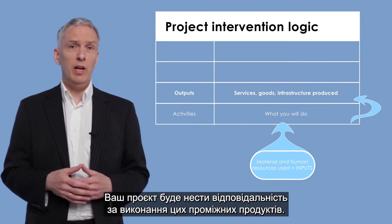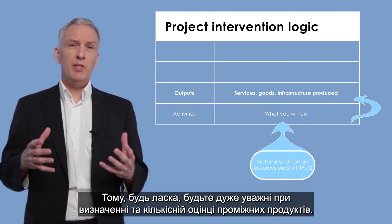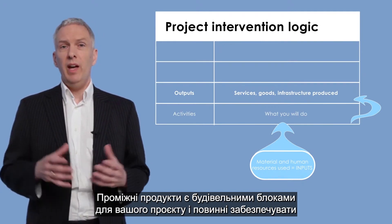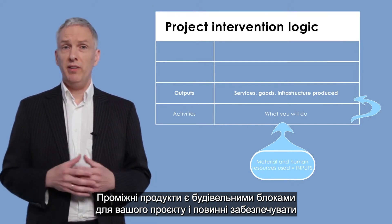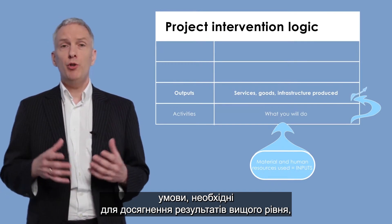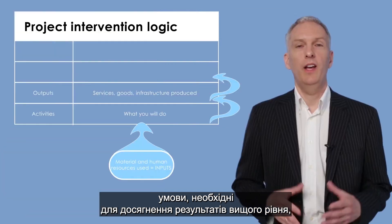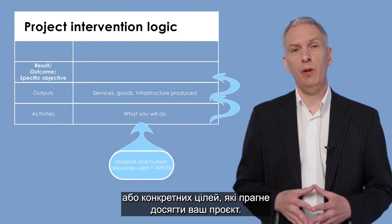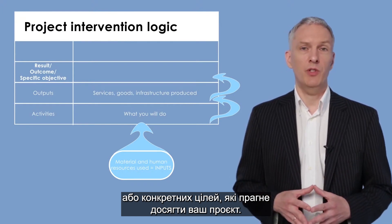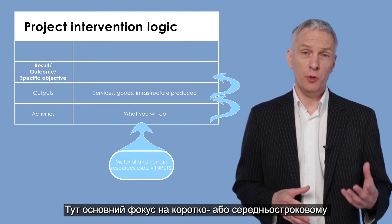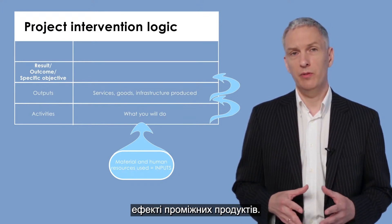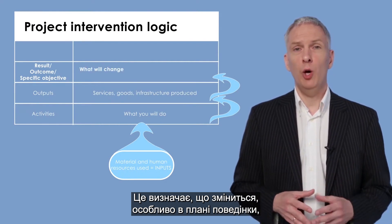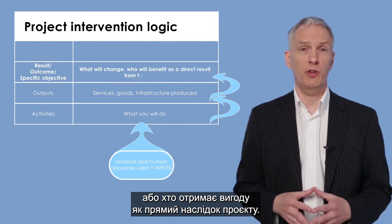Your project will be held accountable for delivering these outputs, so please be very careful when defining and quantifying them. Outputs are the building blocks for your project and should provide the conditions necessary to achieve the higher-level results. The project's higher results level — also often called the outcome or specific objective level — specifies what your project aims to achieve. It focuses on the short-term or medium-term effects of the outputs, and identifies what will change in terms of behaviour or who will benefit as a direct consequence of the project.